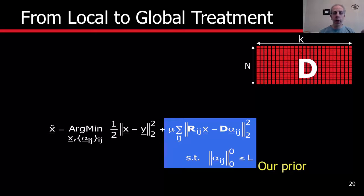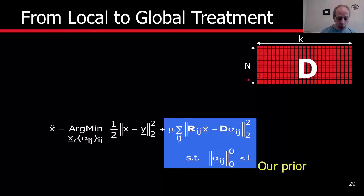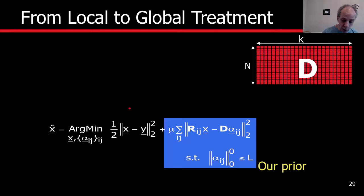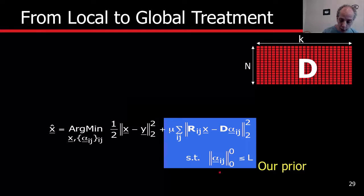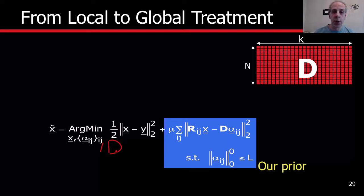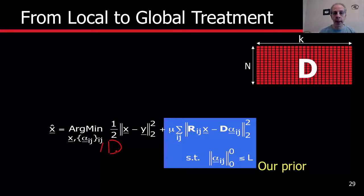We are going to construct a dictionary that works on all the overlapping patches of a given image at the same time. The model is for the individual patches. Note that we are doing the optimization over the signal — this is the whole image. We are looking for the sparse code, and as we are going to see in a second, we are also going to learn the dictionary. We could learn the dictionary offline, or we could learn it and adapt it for the image.